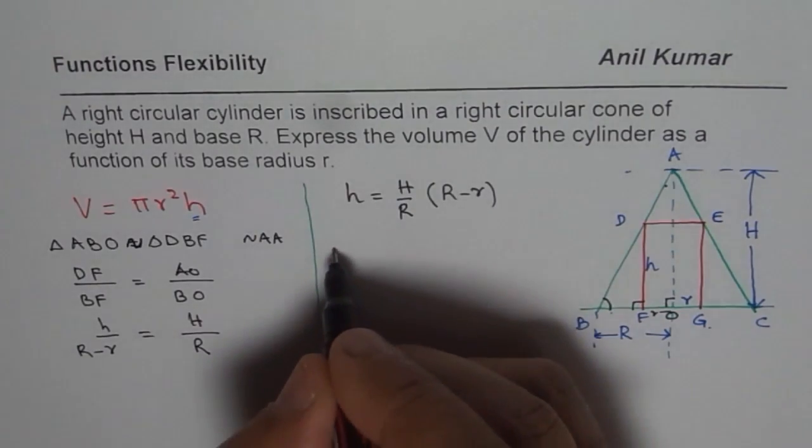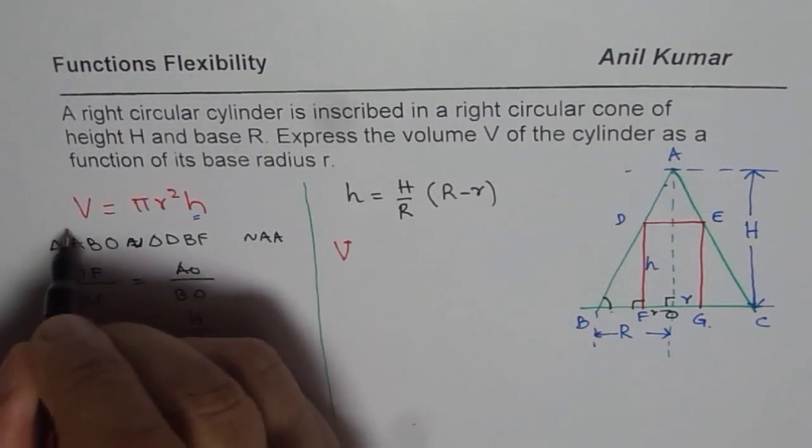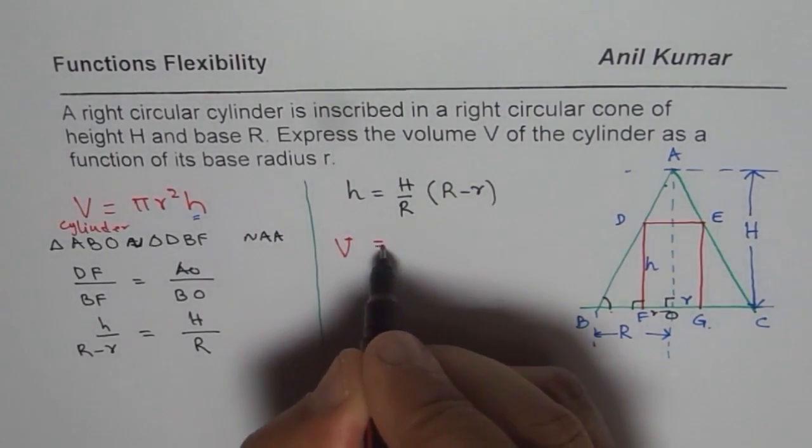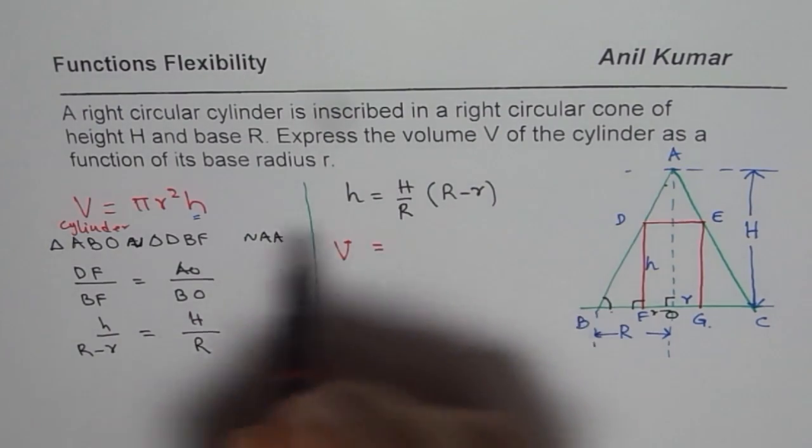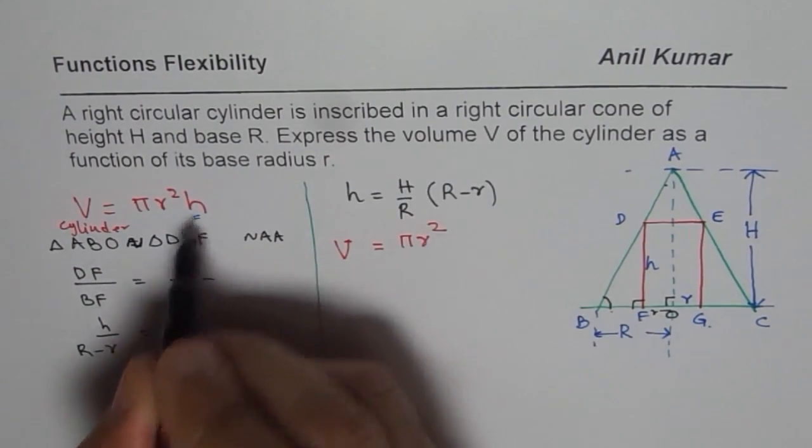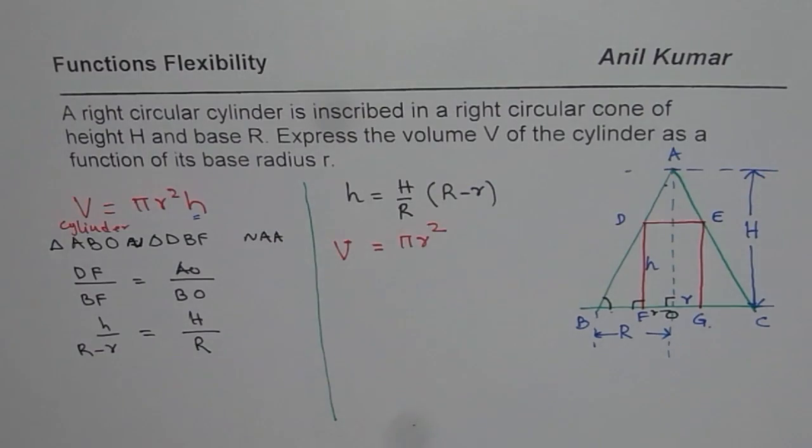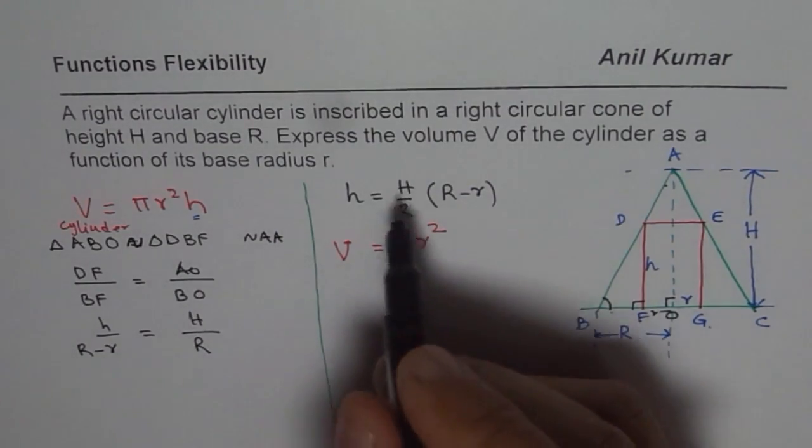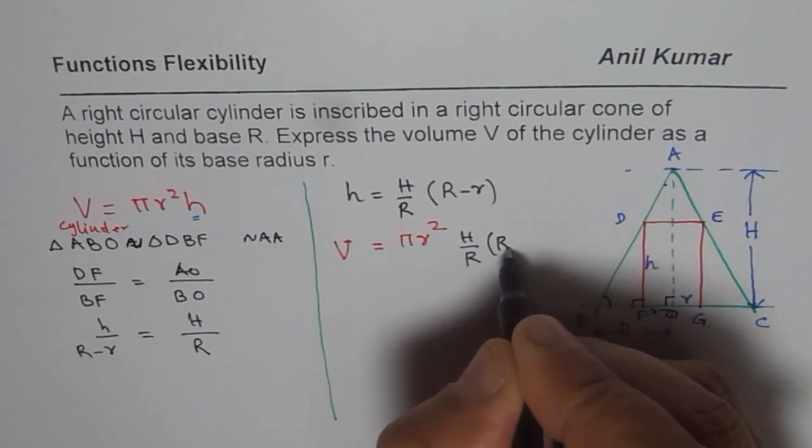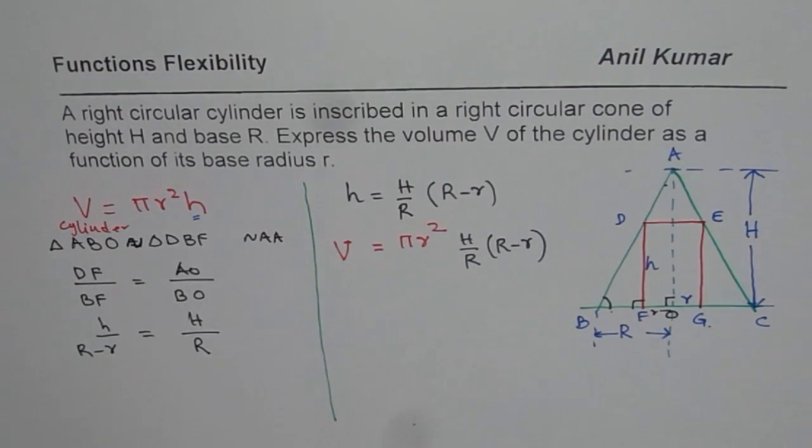I get volume of the cylinder. This is volume of cylinder. Volume of cylinder is equal to πr² and instead of height, what I am going to do here is write down what we wrote. Height is H over R times R minus r. You get the idea. That is how you can write one function in terms of the other function.